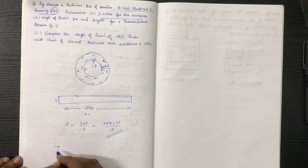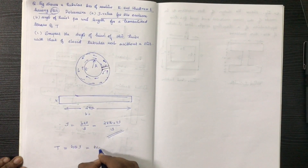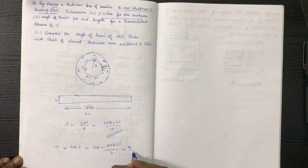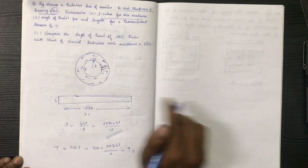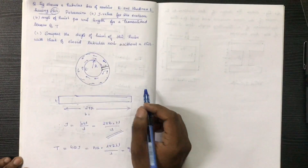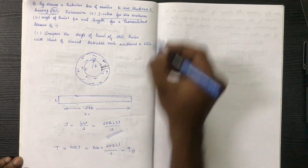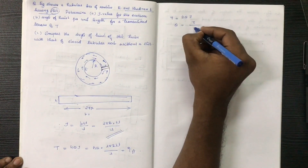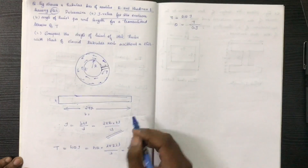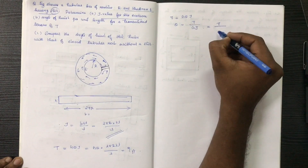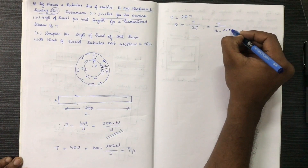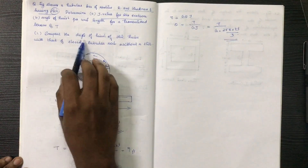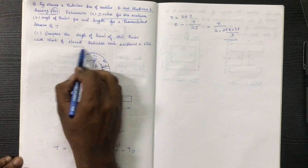T is equal to G theta into J, which is equal to G theta into J. This is 2 pi R into t cube by 3. This is the angle of twist per unit. The angle of twist per unit is T. T is equal to G theta into J. Then T by G theta gives the J value, which is 2 pi R into t cube by 3, equal to t cube by 3.